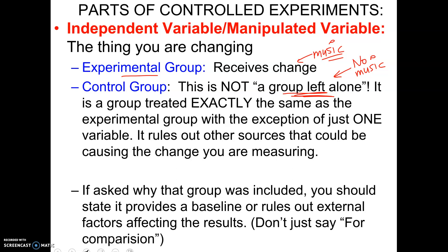If you're asked on an AP exam what was the purpose of the control group, don't just say it was for comparison. Instead say it gives a baseline score for what test scores are like without music, or that it rules out external factors affecting the results. For example, if everybody does badly on the test, that might tell us something. Be specific about what information the control group is actually providing.